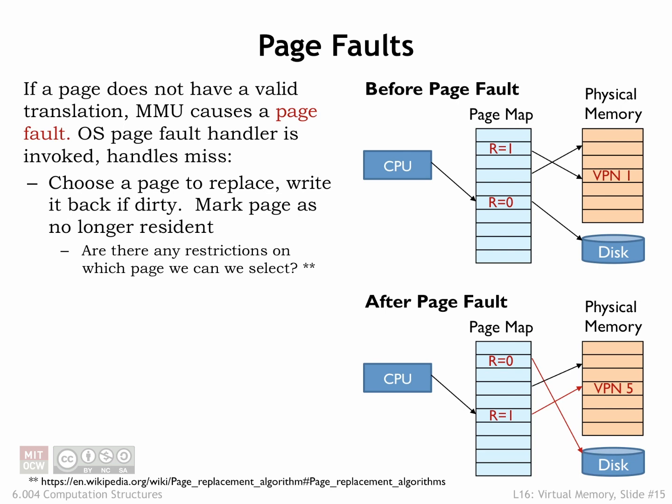the MMU signals a page-fault exception, causing the CPU to suspend execution of the program and switch to the page-fault handler, which is code that deals with a page fault. The handler starts by either finding an unused physical page or, if necessary, creating an unused page by selecting an in-use page and making it available.